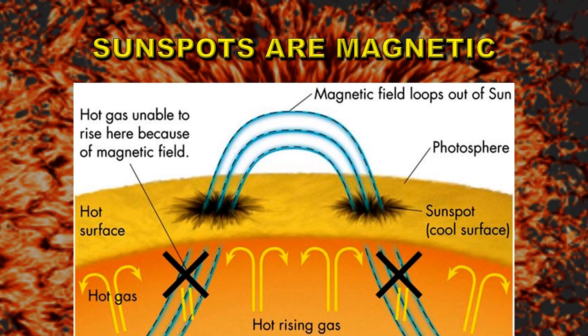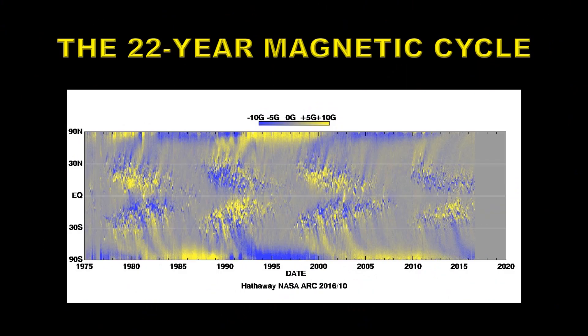Sunspots are magnetic — that's why they appear dark. The photosphere is at a temperature of about 5,700 degrees Kelvin because hot gases are rising from the hotter inner layers of the sun. The strong magnetic fields in sunspots — about 20,000 times stronger than Earth's magnetic field — inhibit some of that motion, so less energy reaches the surface, and consequently they emit less light and appear darker by contrast. If you were to place a sunspot up in the sky, it would actually be brighter than the moon — but by contrast on the sun's surface, it appears dark.